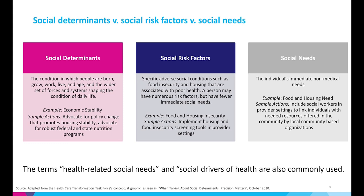While it is clear that social determinants of health contribute to a person's health status, the term is often used imprecisely and conflated with similar yet distinct terms such as social risk factors and social needs. Social determinants are defined as the conditions in which people are born, grow, work, live, and age, and the wider set of forces and systems shaping the conditions of daily life. Economic stability is an example. A sample action to address economic stability would be to advocate for policy changes that promote housing stability or advocate for robust federal and state nutrition programs.